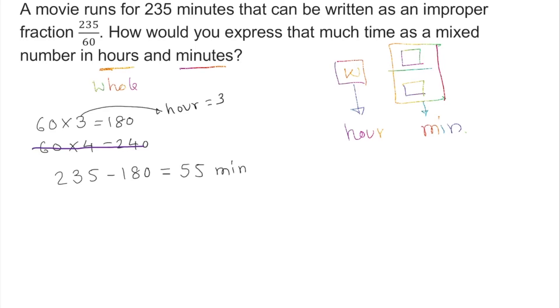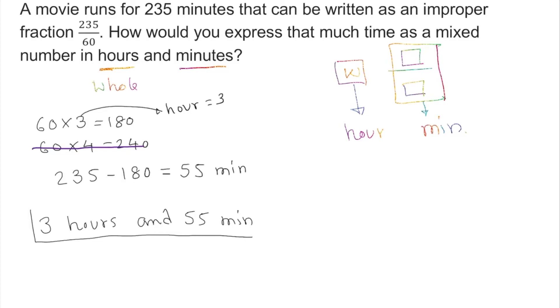Now, 235 minus 180 gives us 55 minutes. So the answer is 3 hours and 55 minutes. That's how we can find the answer using trial and error.